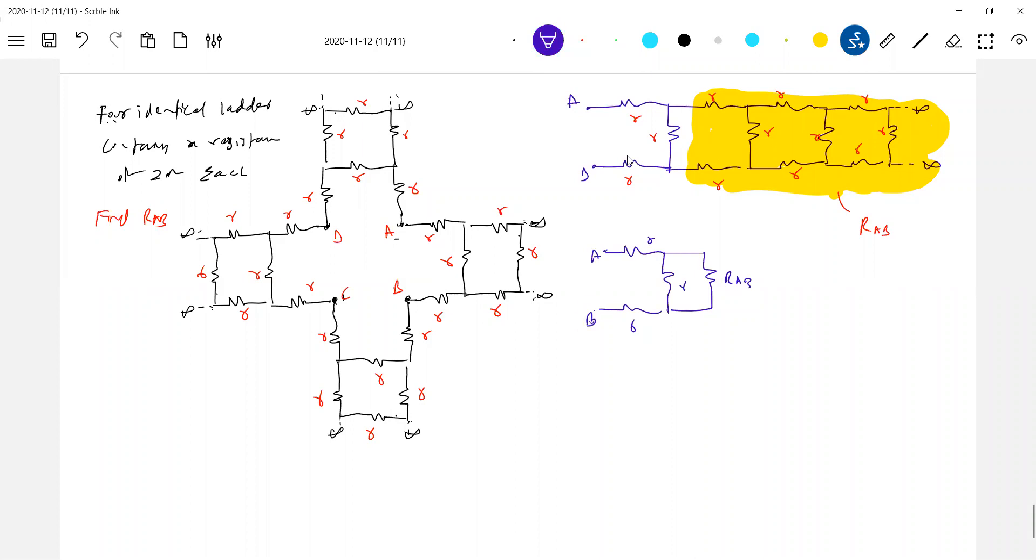So therefore, what is your total circuit? RAB should be equal to R plus R times RAB divided by R plus R plus RAB plus R. Why? Because these two are in parallel. That effective will come in series with these two.